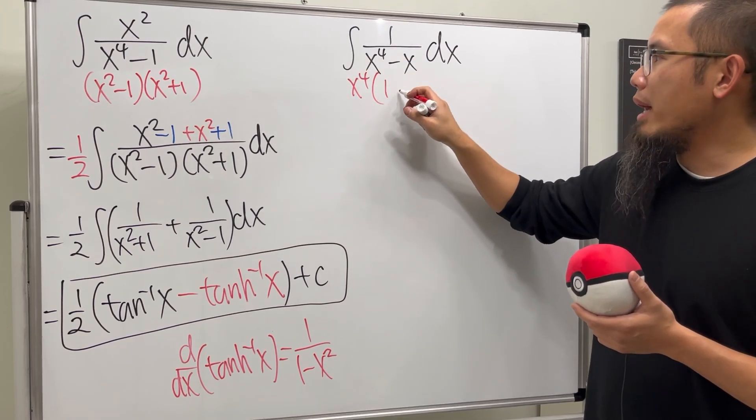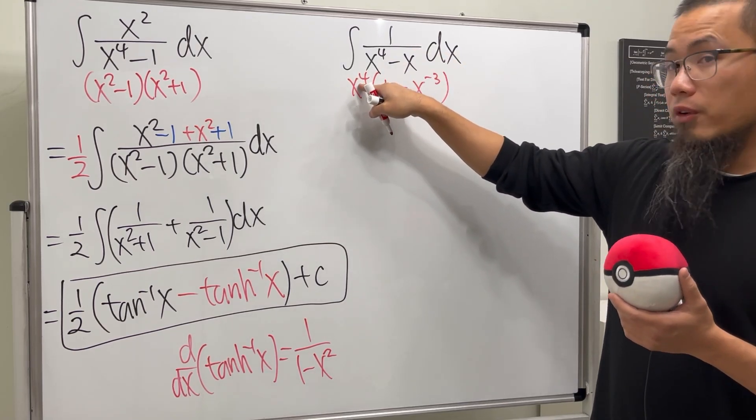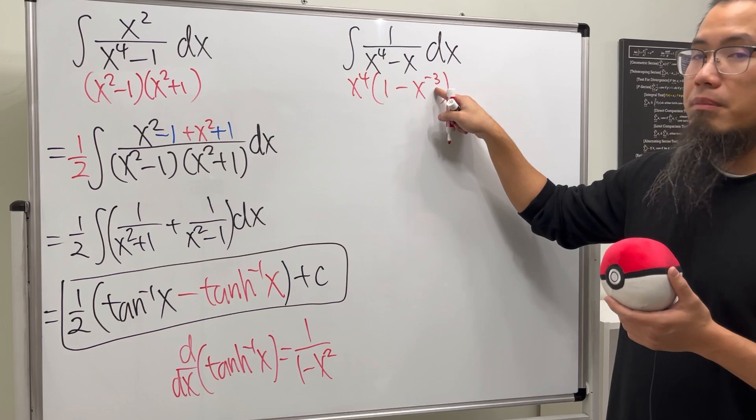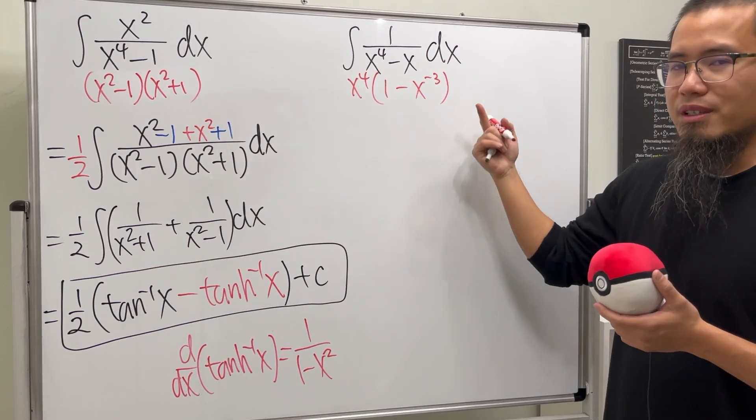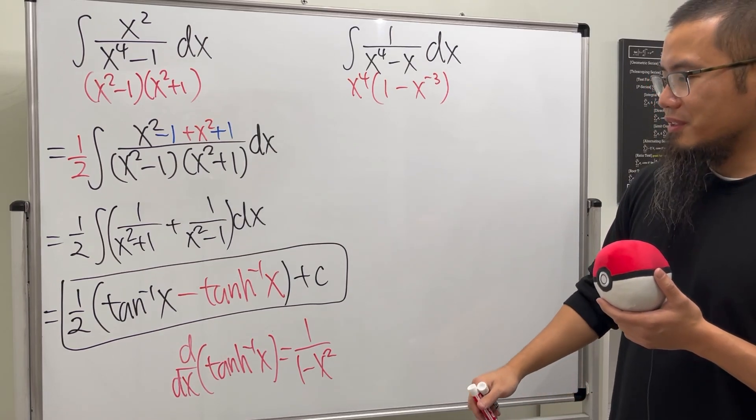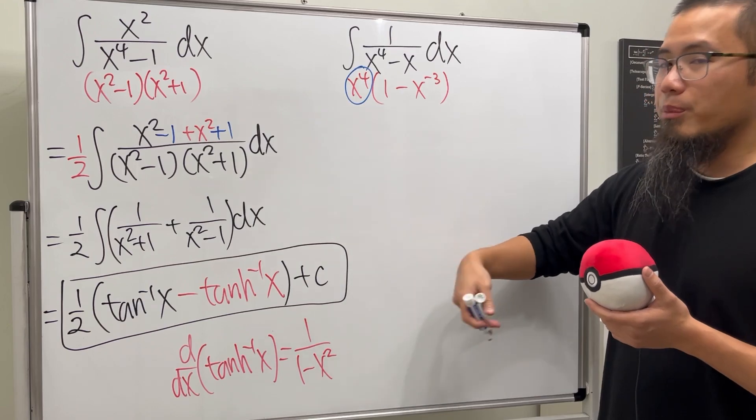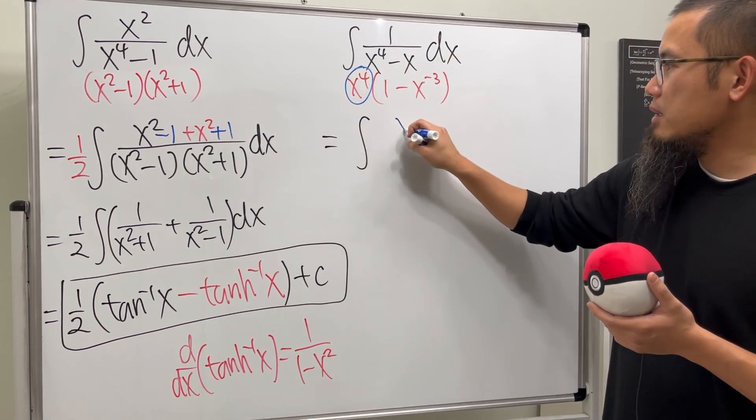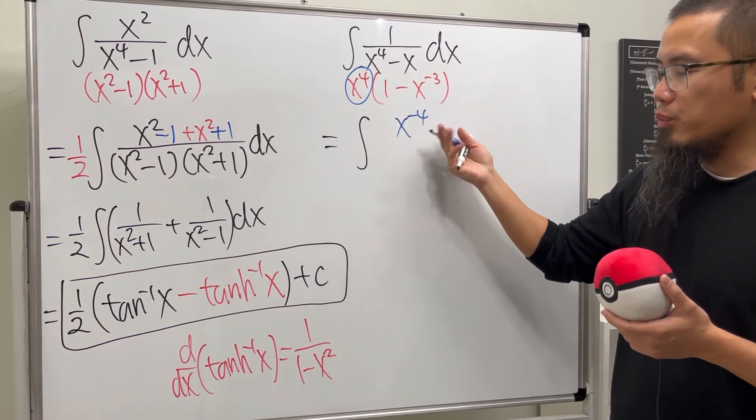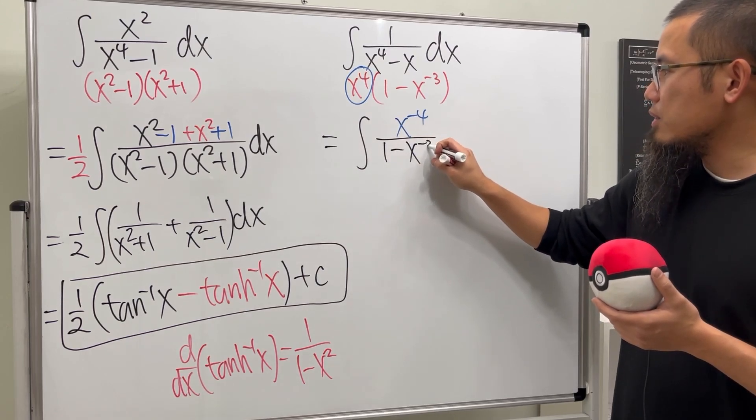Instead of factoring out the x, let's factor out the x⁴, the bigger power. And you end up with 1 - x⁻³ because originally this is 1. You brought up 4 of them, so you have minus 3 left. 1 - 4 is -3. Check this out. This guy on the bottom, we can bring that up. This is the same as the top is x⁻⁴. Bringing that up, we get x⁻⁴. And then on the bottom, we have 1 - x⁻³.